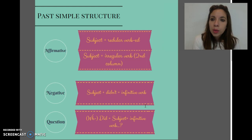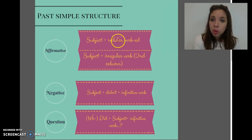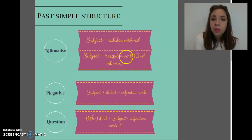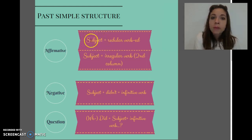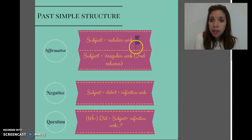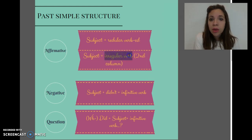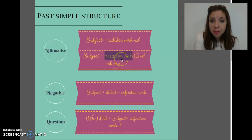Now, here we have the structure of the past simple. As you know, past simple verbs can be divided into two different kinds: regular verbs and irregular verbs. With regular verbs, you simply add "-ed" to put them in the past. If those verbs are irregular, you have to go to the second column of the irregular verbs list and use the past simple form.